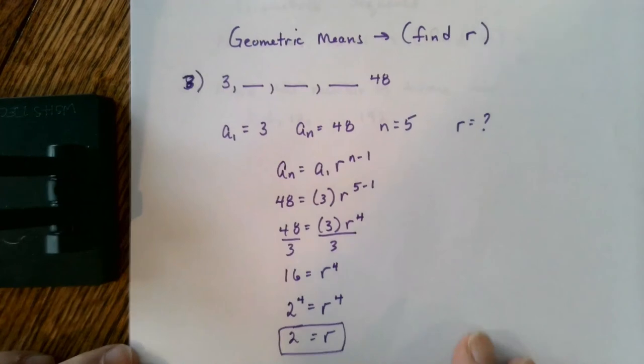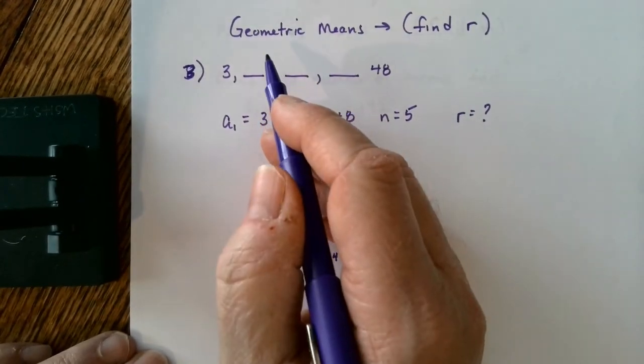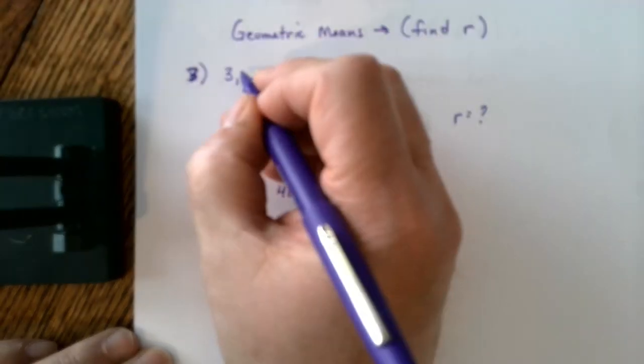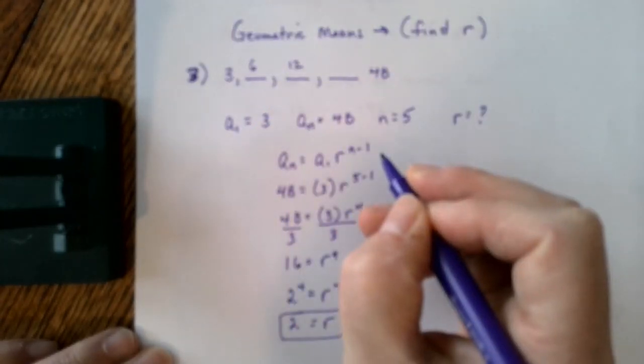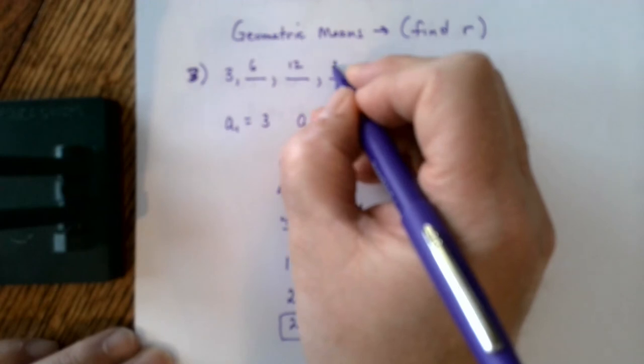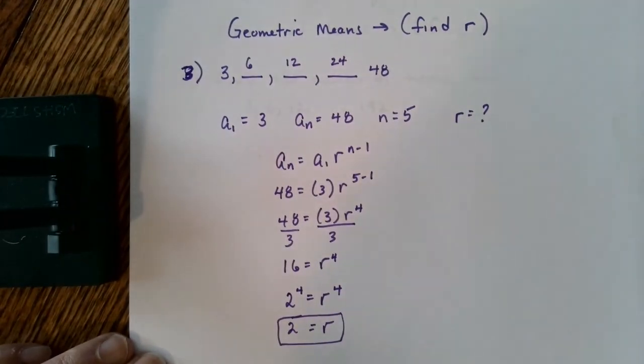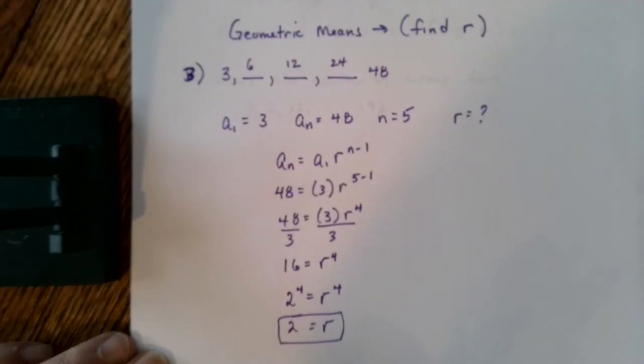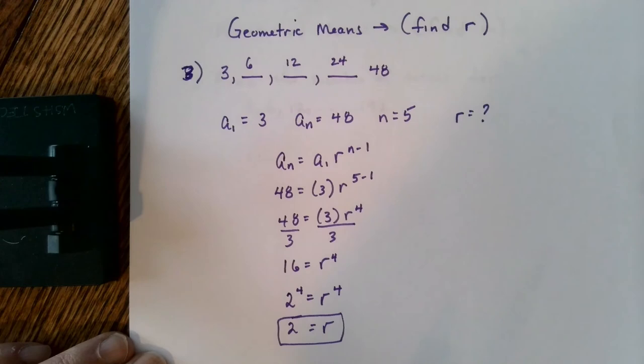Now that I know what my common ratio's value is, I can come back up top here and fill in the rest of the blanks. 3 times 2 is 6, 6 times 2 is 12, 12 times 2 is 24, and I always check my last value to make sure that it works. 24 times 2 is 48. So you can use your geometric means to make your calculations by finding R.